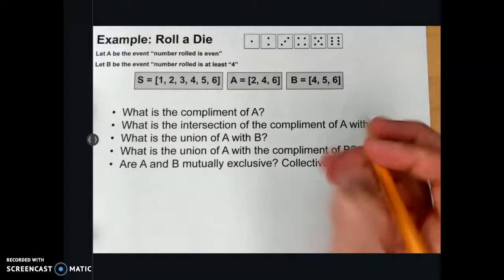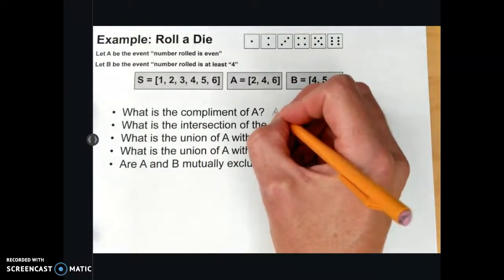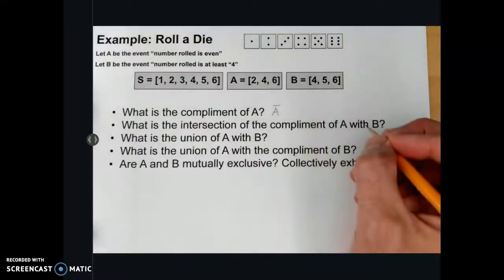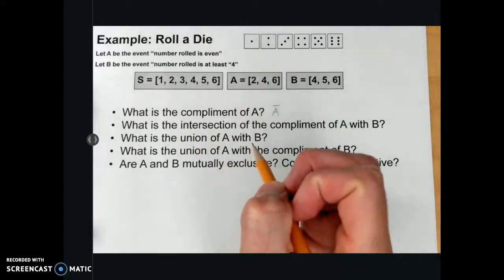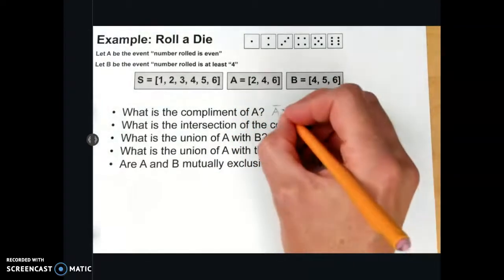What is the complement of A? We denote A complement as A bar, and it would be everything in the sample space not in A. So that would be 1, 3, 5.